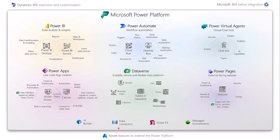There are also features that are available across all these apps. AI Builder is the low-code artificial intelligence solution that lets you take advantage of pre-built models such as object detection, form processing, and sentiment analysis. You can hook these models into your Power App for form processing or image recognition, or leverage them within Power Automate flows — for example, to extract image or text information from incoming data.